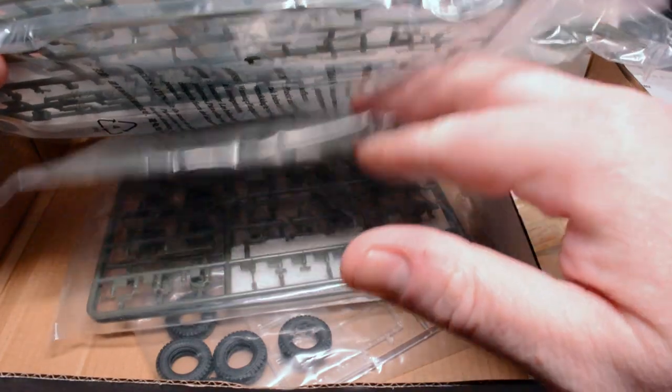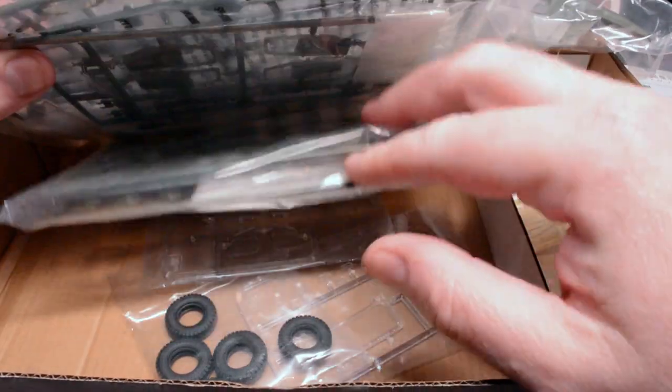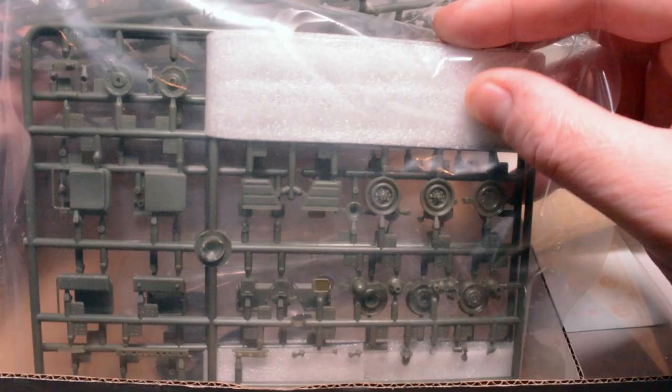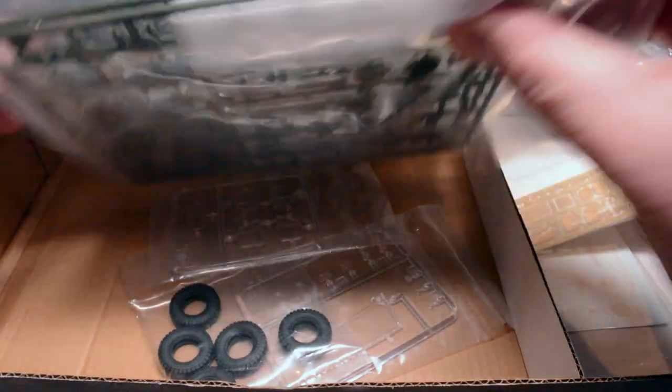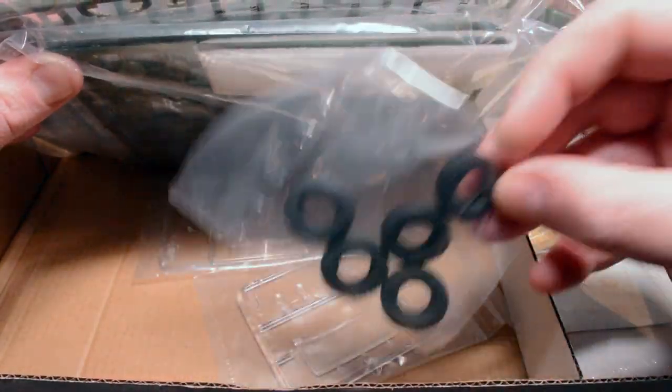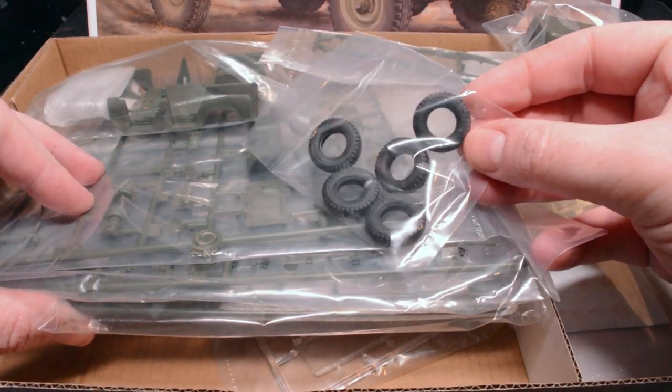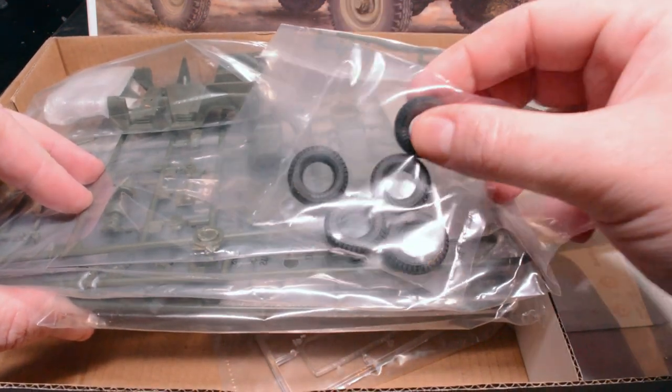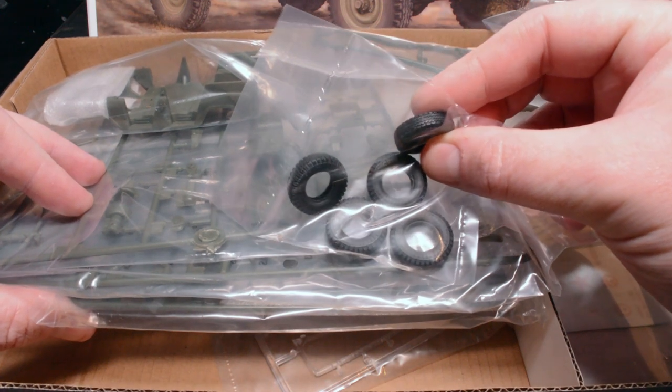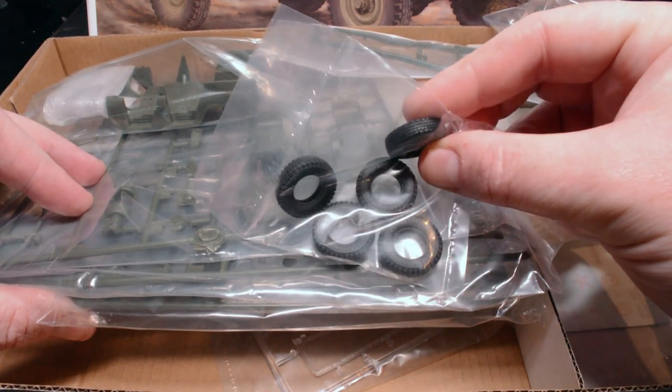I thought it was a nice touch that Trumpeter had wrapped some of the sprues themselves with foam where the details were particularly tiny as this prevented any damage and the kit did come with five rubber or vinyl tyres, I can't tell which one's which, but they were well moulded and the seam ran around the tread so it would be easy to remove.